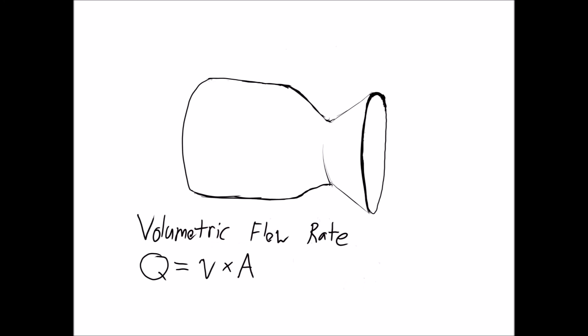This can be modeled by the volumetric flow rate equation. This states that the amount of volume that flows through any section in the pipe must be the same. So as the cross-sectional area decreases, the velocity must increase.